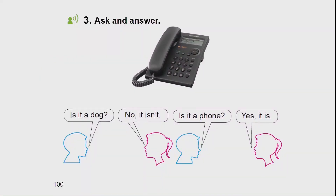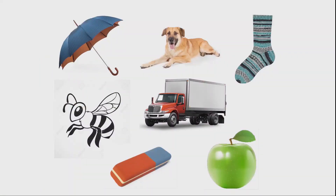Now, I will show you a picture, I will ask you a question, and you need to answer my question. Look at the picture, please. Is it a dog? No, it isn't. Is it a phone? Yes, it is. Now it's time to play a game. Choose one picture. Work with your friend but don't tell your friend what it is. Your friend asks you a question starting with 'Is it?' and you answer with 'Yes, it is' or 'No, it isn't.' The game stops when your friend guesses the word. Then you ask questions and your friend answers.